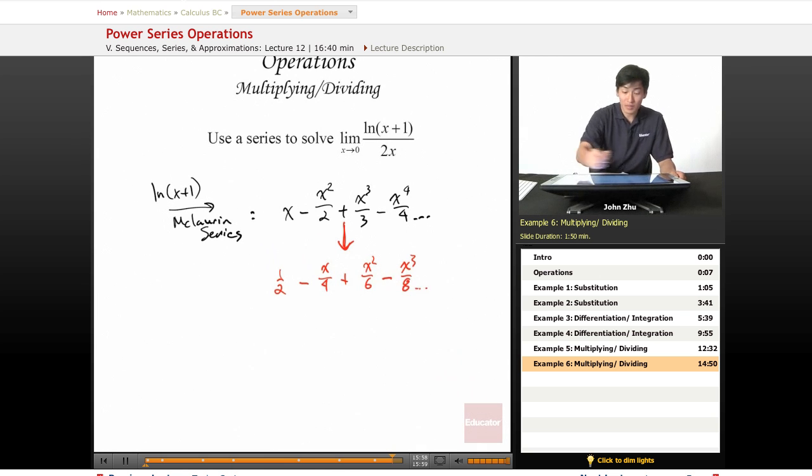So to find the limit as x approaches 0 of ln(x+1) over 2x equals, we have 1 half minus, as x approaches 0, this term becomes 0, so does this one, so does this one, so does every term after that. So we are left with 1 half.